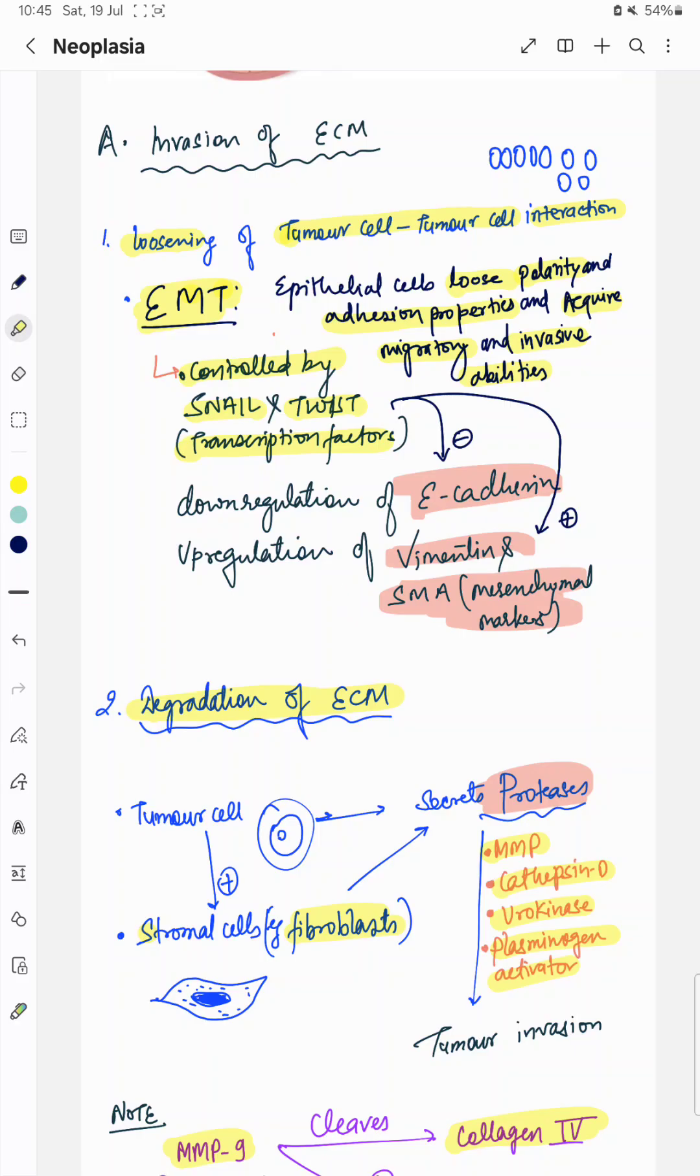Down-regulation of E-cadherin will result in loosening between tumor cells. Snail and Twist up-regulate vimentin and smooth muscle actin. These are mesenchymal markers. They further increase or promote the migration of tumor cells or promote epithelial mesenchymal transition.